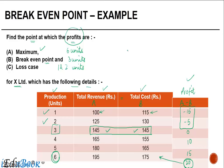The maximum loss occurs when only 1 unit is produced. The loss reduces when 2 units are produced. On manufacturing 3 units, the company enters the break even point. Units 4, 5, and 6 result in profit, with the maximum profit achieved at 6 units.